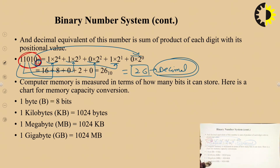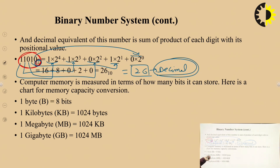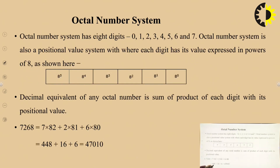Also remember that 1 byte equals 8 bits, 1 kilobyte equals 1024 bytes, 1 megabyte equals 1024 kilobytes, and 1 gigabyte equals 1024 megabytes.